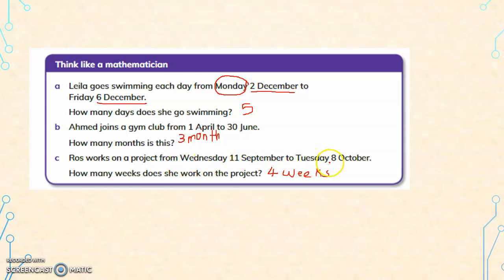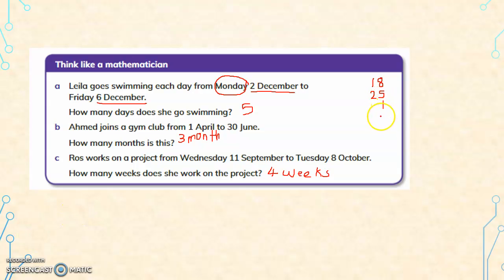Wednesday to Tuesday is one week — that is 7 days. So Wednesday to Tuesday is one week. 11th September to 18th is week 1, 18th to 25th is week 2, 25th to 1st is week 3, and 1st to 8th is week 4. She goes for work for 4 weeks.